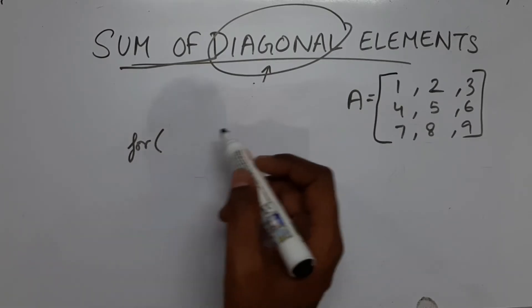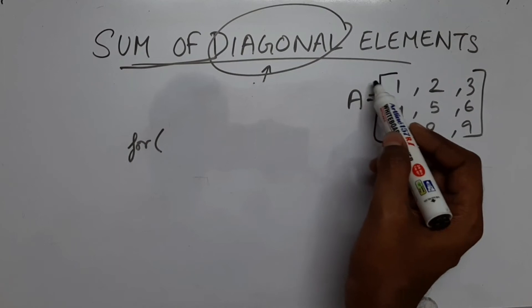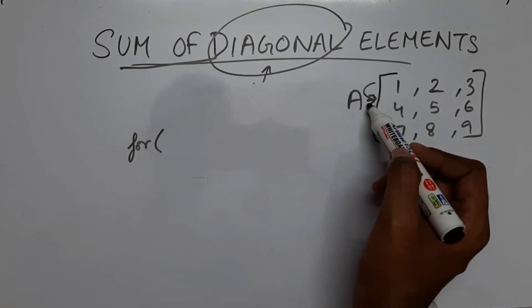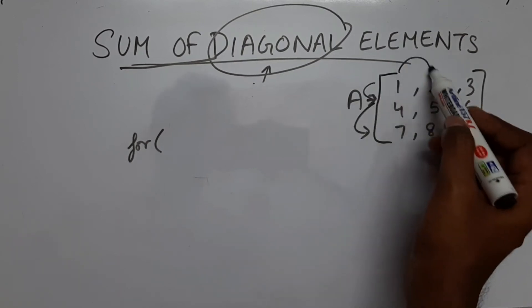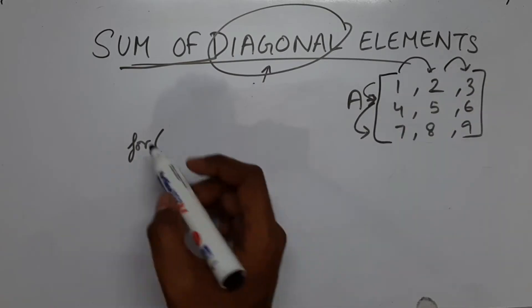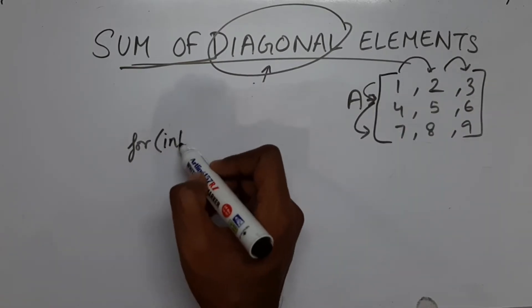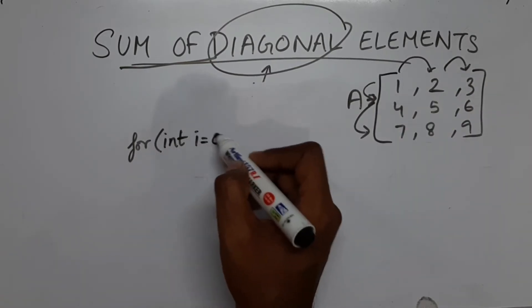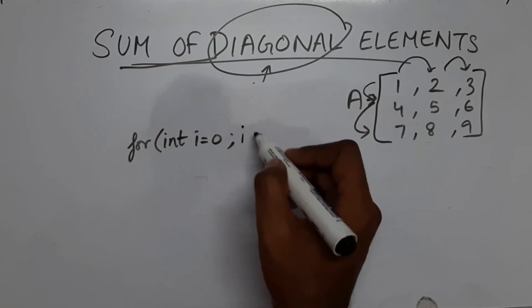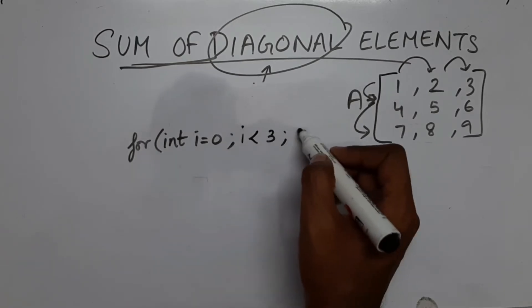So from for loop, I am going to use 2 for loops. One for loop is to traverse the row and one for loop to traverse the column. So first for the row I will say int i equal to 0 and i is less than 3 i plus plus.